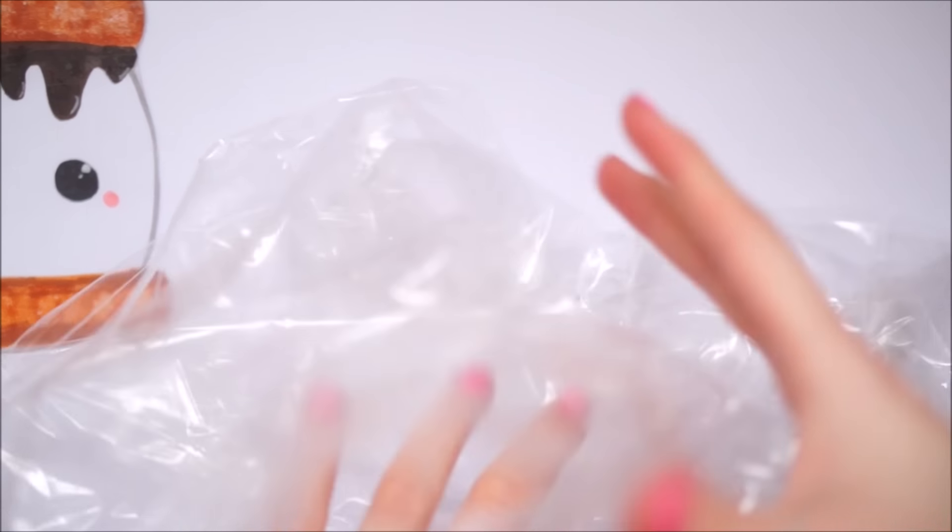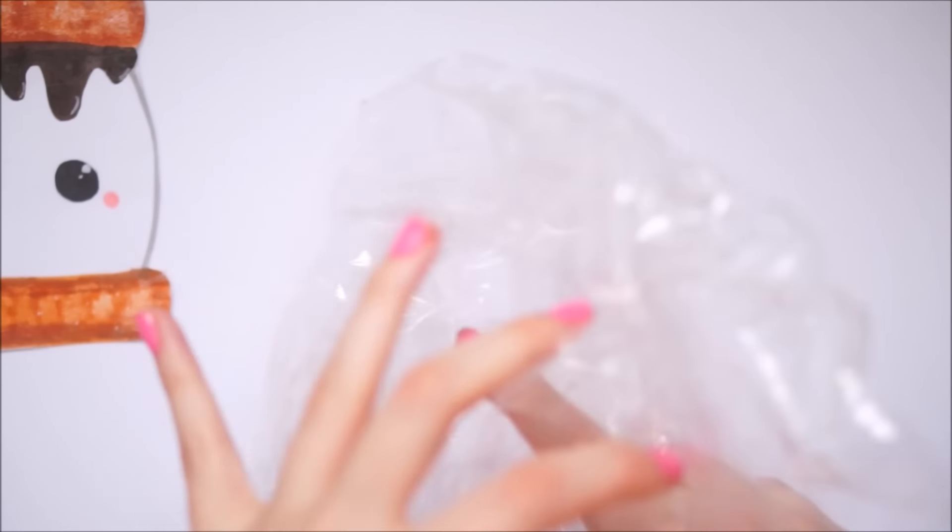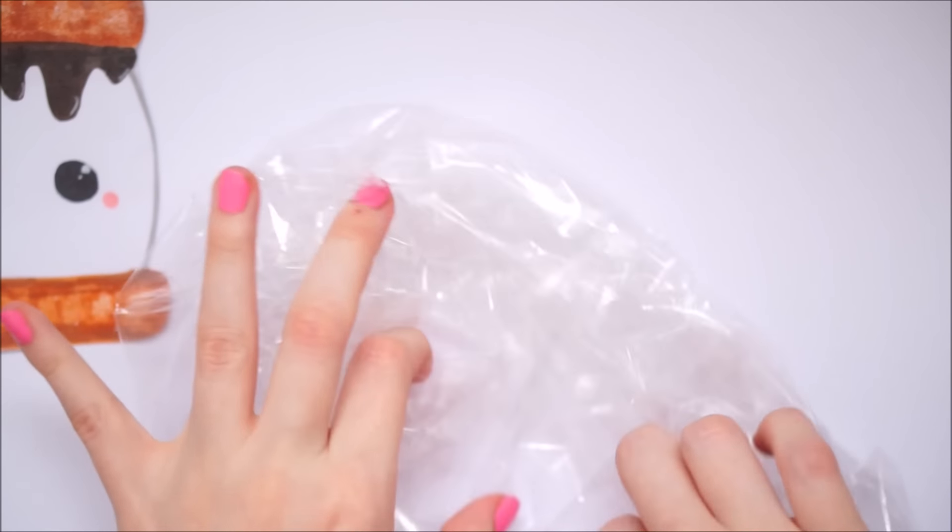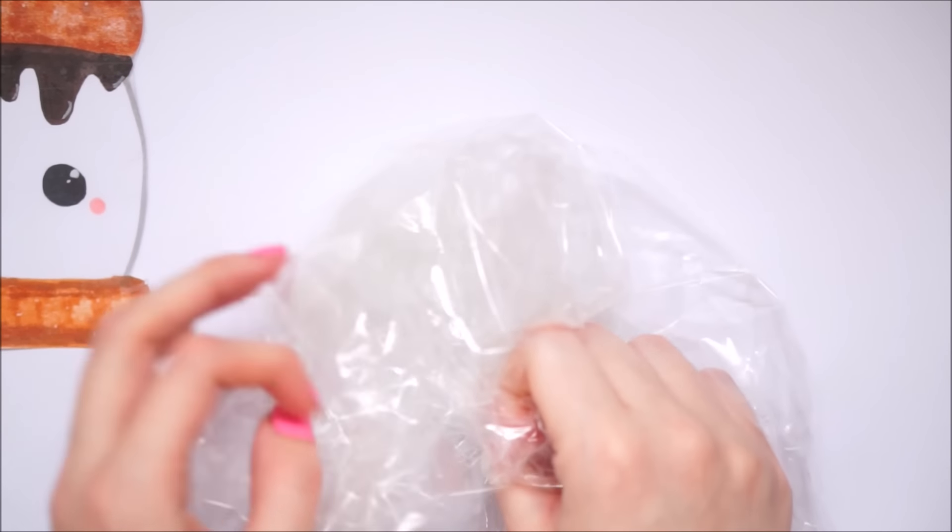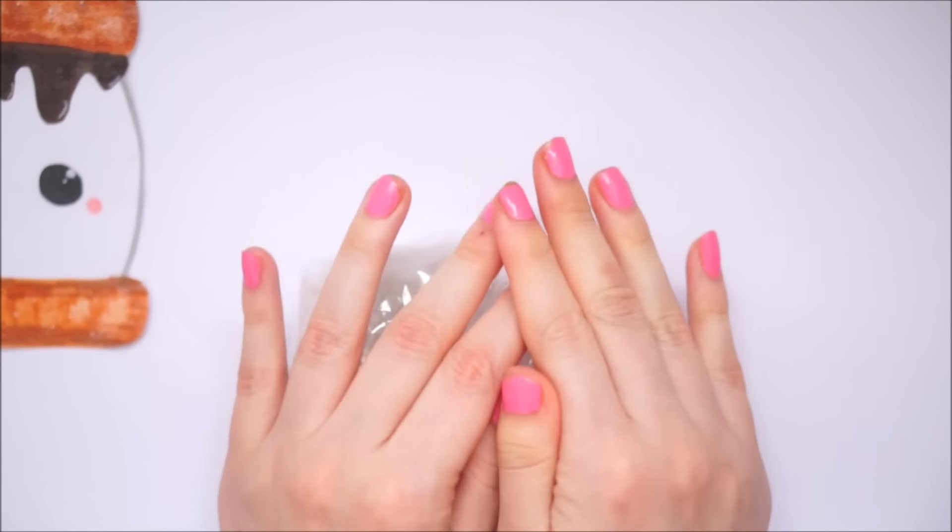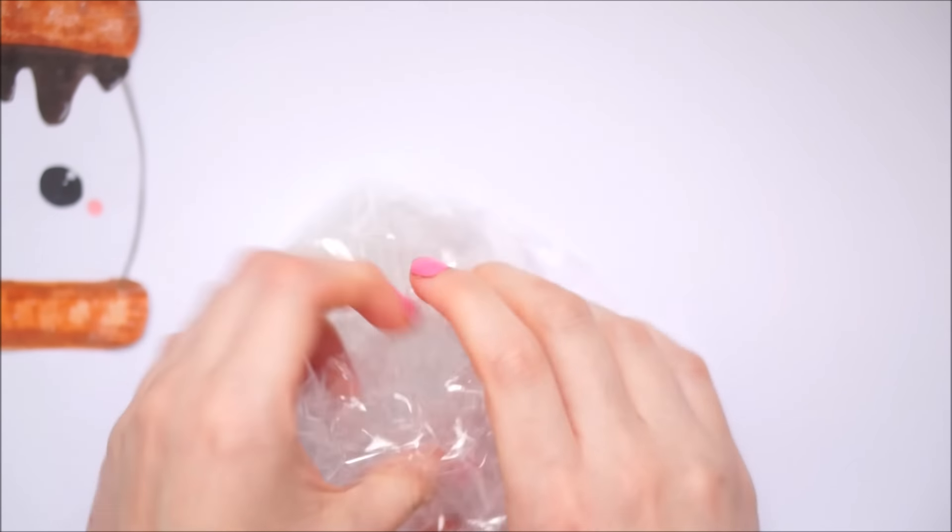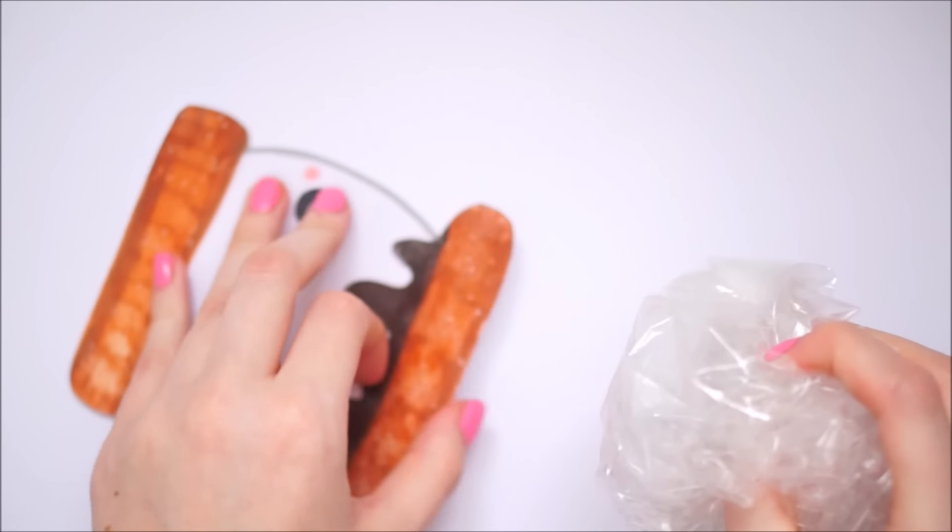I've basically taken a clear plastic bag and scrunched it up. I did actually put a little bit of toy stuffing inside because my bag wasn't that big once scrunched up, so I just added a bit of stuffing to add a little bit extra size. You don't have to do this at all.